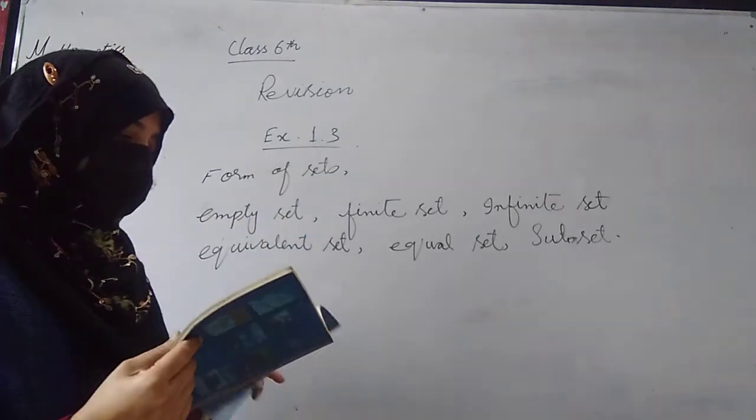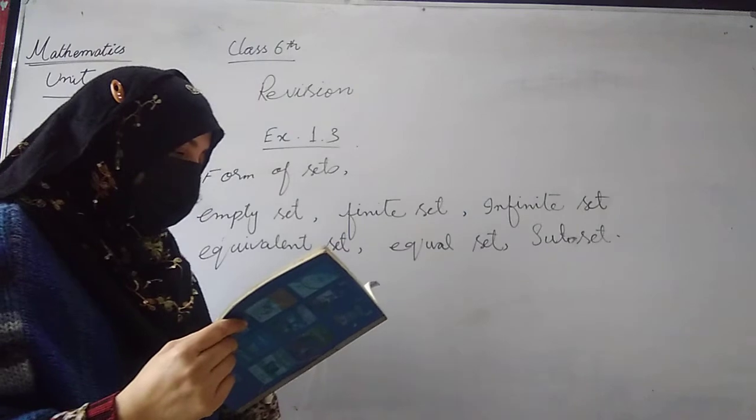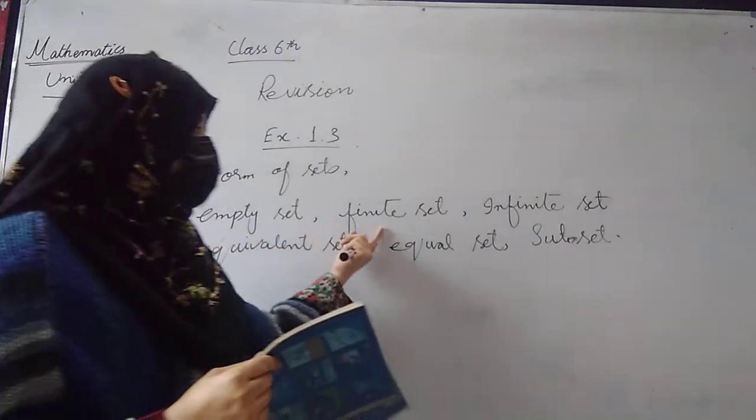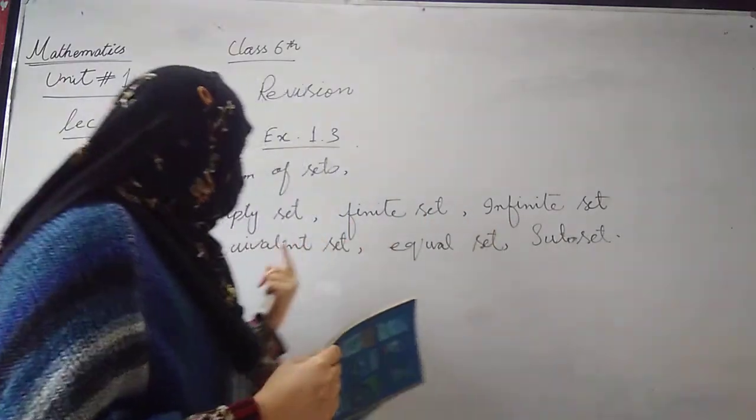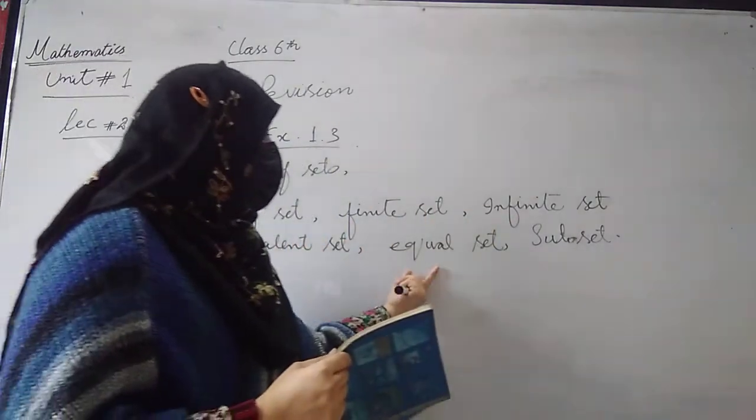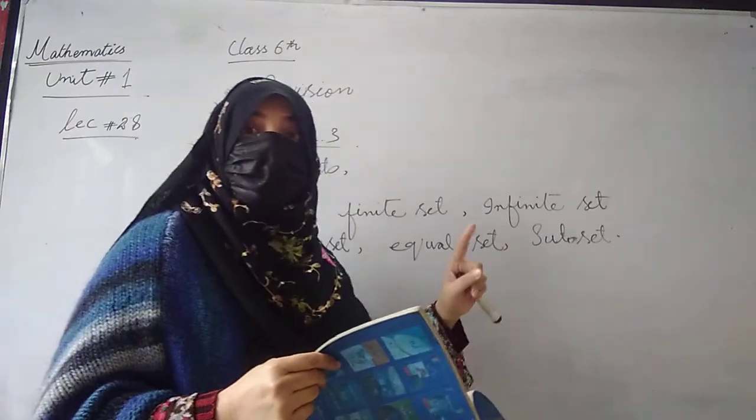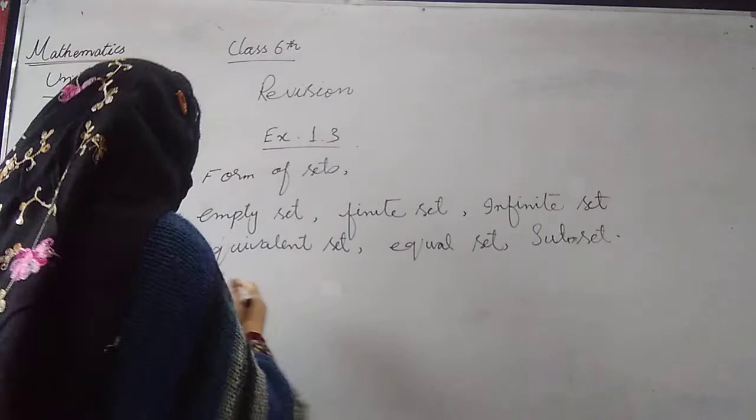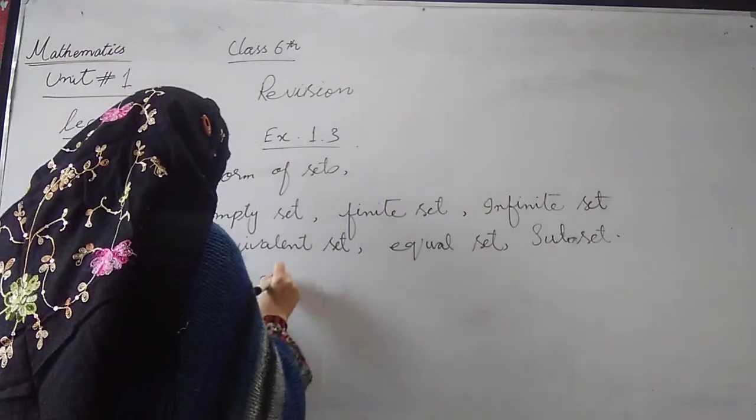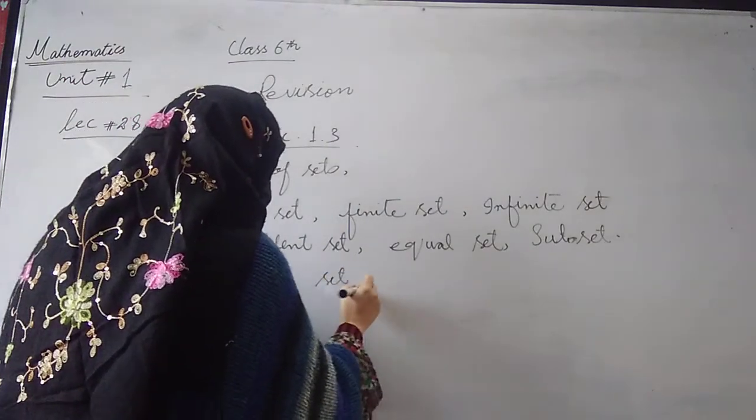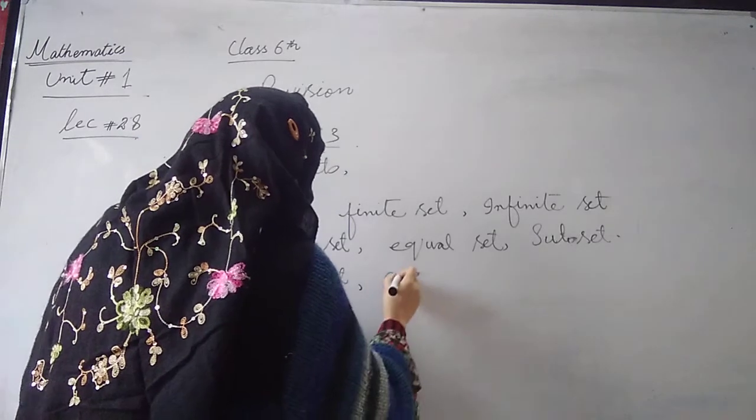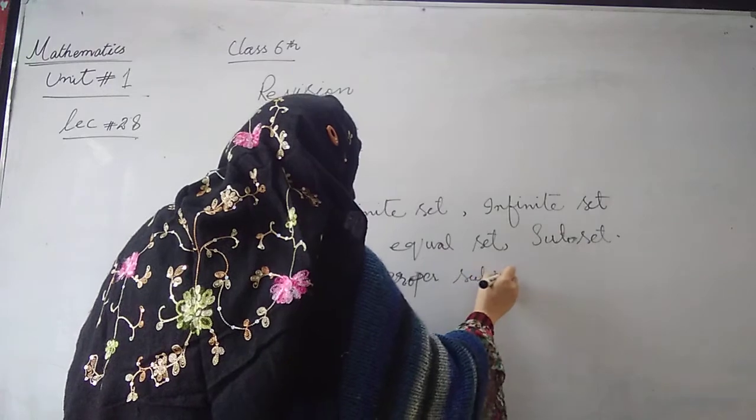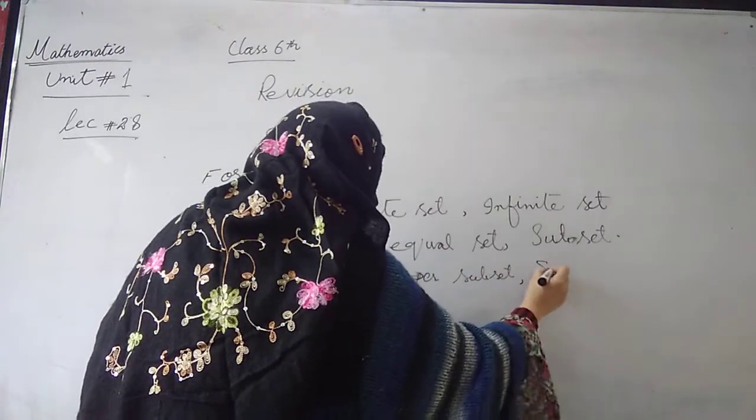We have to say form of sets, types of sets. How many sets are there? Empty set, finite set, equal set, equal set, subset, superset, proper subset, superset, proper subset, and singleton.